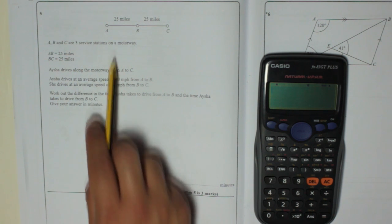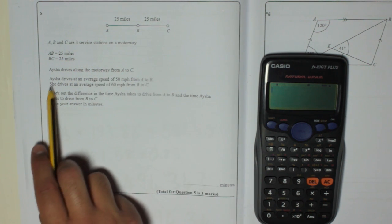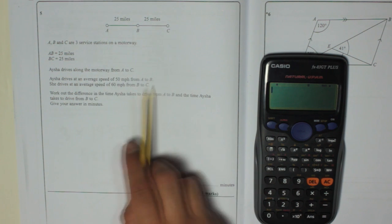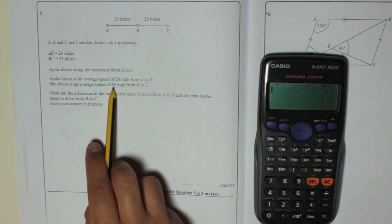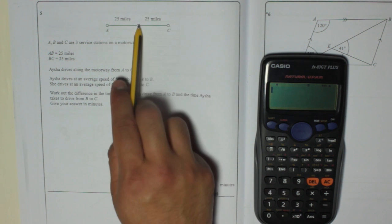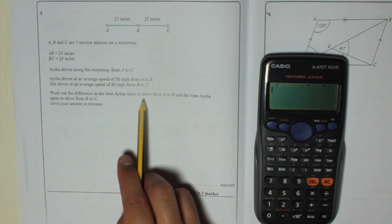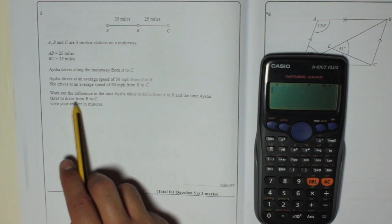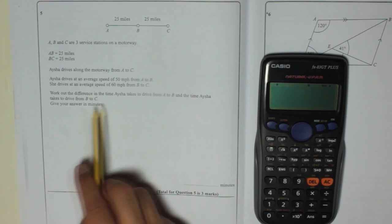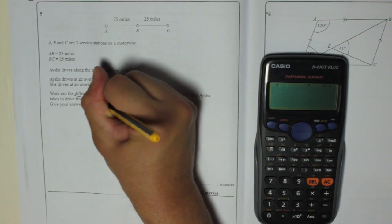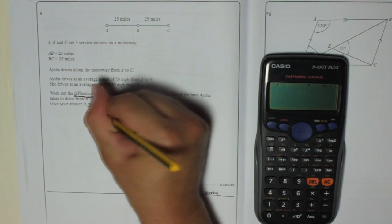Aisha drives along the motorway from A to C. She drives at an average speed of 50 miles per hour from A to B, and 60 miles per hour from B to C. Work out the difference in time Aisha takes to drive from A to B and the time she takes to drive from B to C. Give your answer in minutes. So remember, work out the difference - that's important. Difference and minutes.